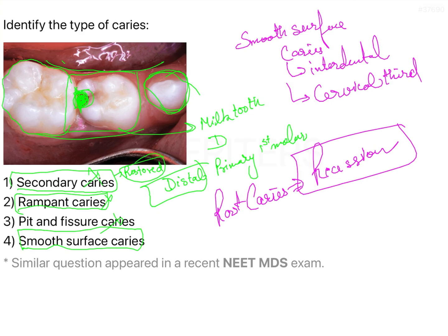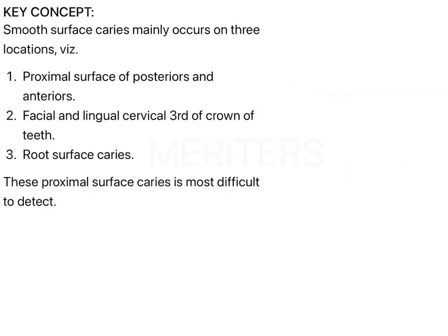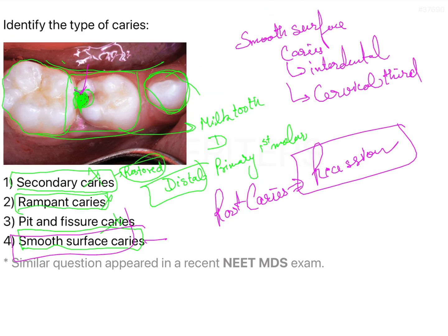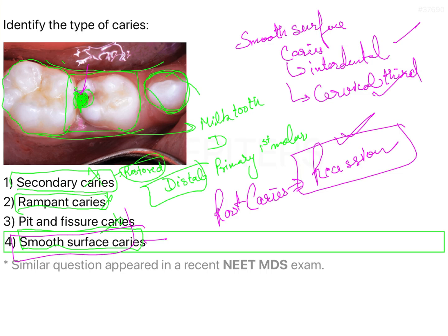So these are the five types of caries, and this is a very direct question. The proximal caries seen here are smooth surface caries. Smooth surface caries occur in three locations: the proximal surface of posteriors and anteriors, the facial and lingual surface at the cervical third of the crown, and root surface caries seen in older patients with recession. The answer to this question is option number four — smooth surface caries, as depicted in this picture.